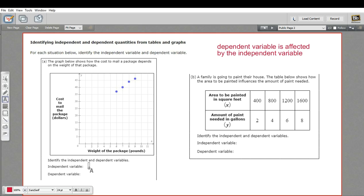So here, the independent variable is the weight. Your package can weigh whatever it wants. The dependent variable is the cost because the cost will be affected by the weight of the package.